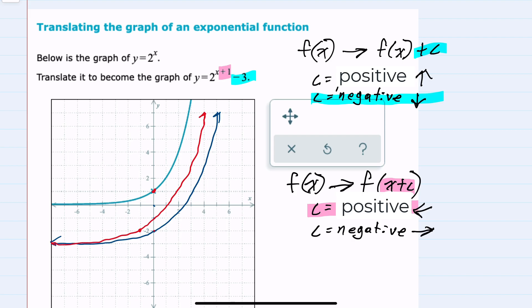So this red line would represent both translations: the minus 3 shifting down 3 units, and the plus 1 shifting it to the left 1 unit.